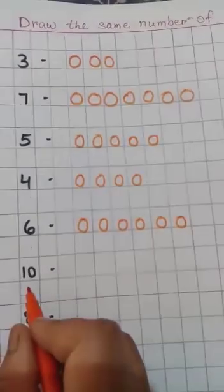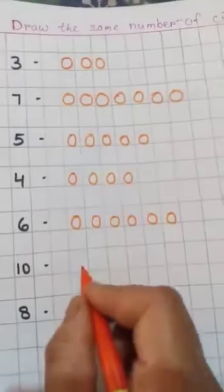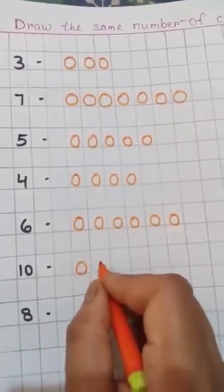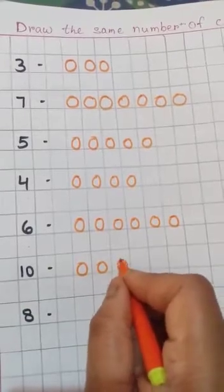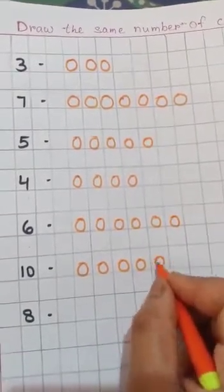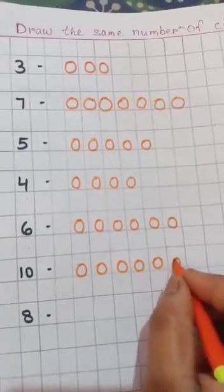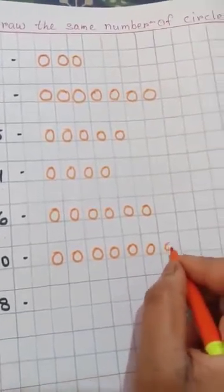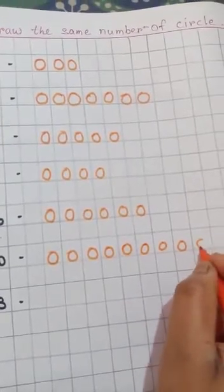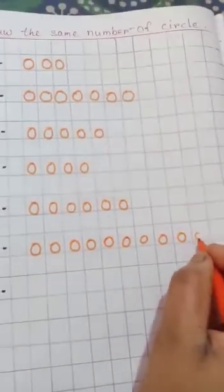Now, 10 circles. Draw 10 circles. 1, 2, 3, 4, 5, 6, 7, 8, 9, 10.